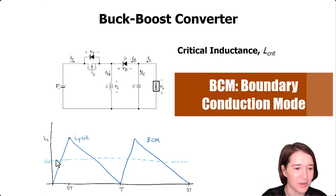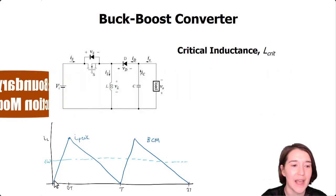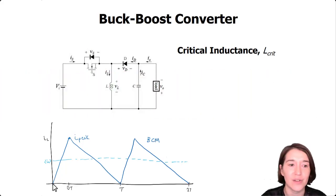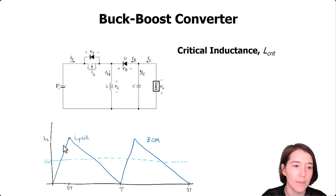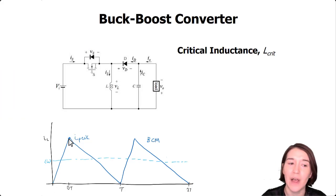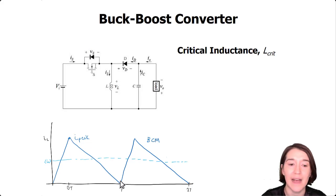At the bottom here we have boundary conduction mode, and this is the inductor current. It's going to start from exactly zero, go up during dT, hit its peak value, and then come back down during the rest of the period and exactly hit zero.